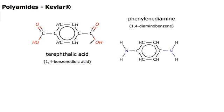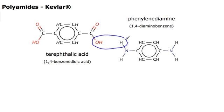Let's look at a couple of examples. The first is a polyamide — Kevlar, which is a very useful material. Kevlar comes about via condensation polymerization between terephthalic acid, commonly referred to as 1,4-benzenedioic acid, and phenylenediamine, or 1,4-diaminobenzene, forming an amide linkage.